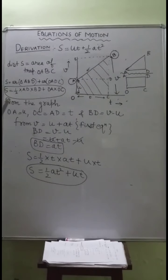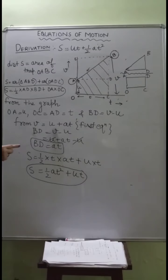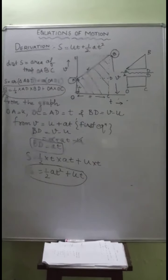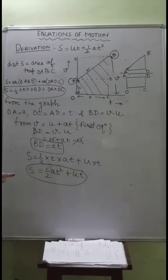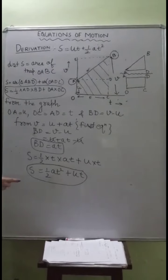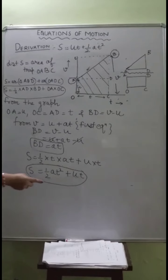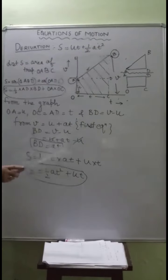Now we use the first equation of motion. BD = v - u, and from the first equation v = u + at, so substituting: BD = (u + at) - u = at. Substituting all values of AD, BD, OA, OC into the equation gives s = ½ × t × at + u × t = ½at² + ut. So the equation becomes s = ut + ½at². This completes the derivation of the second equation of motion.